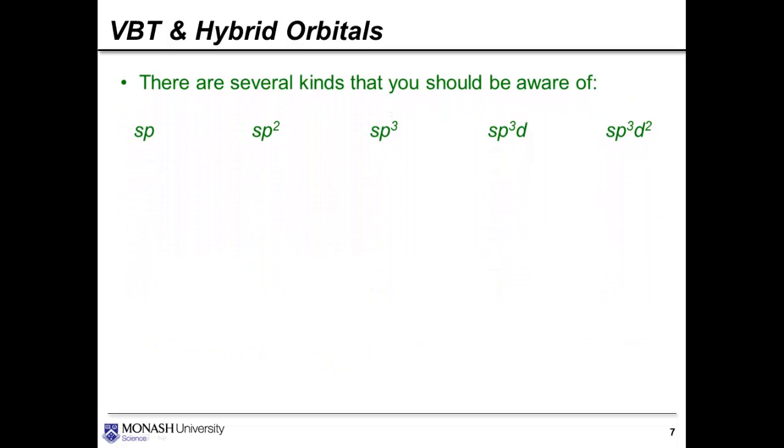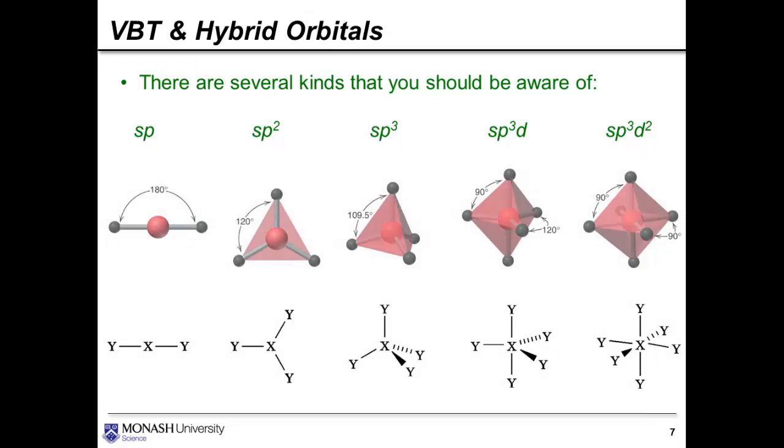But as a general rule, you can make a correlation between these hybridisation schemes and some of the geometries that we've already seen during the VSEPR topic. You can see that SP correlates with linear, SP2 trigonal planar, SP3 tetrahedral, SP3D trigonal bipyramidal, and SP3D2 is octahedral. These two schemes here are probably quite rare, and the ones that you'll deal with most of the time are the first three here.